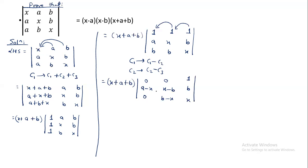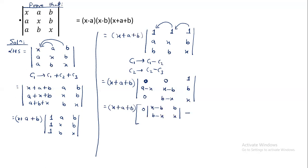So we expand and take x plus a plus b as the common factor. The zero row and column are omitted, and we work with x minus b, b minus x.